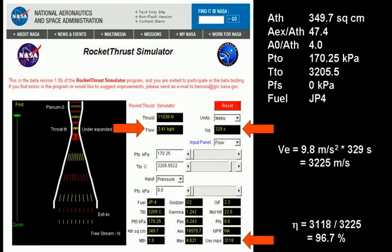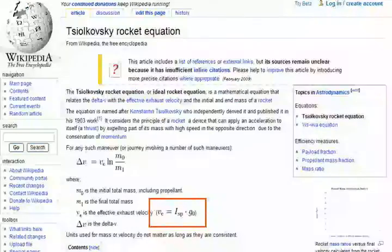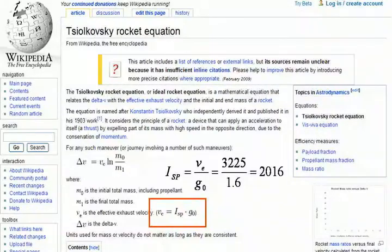Anyway, this is obviously how Gilliam got his numbers. To prove these numbers don't work on the moon, let's return to Wikipedia and calculate the specific impulse for an effective velocity of 3,225 m per second if G0 is 1.6 m per second squared. We get 2,016 seconds.